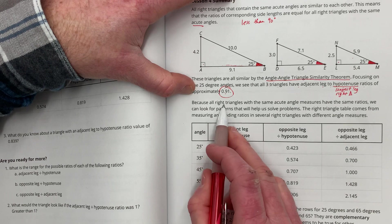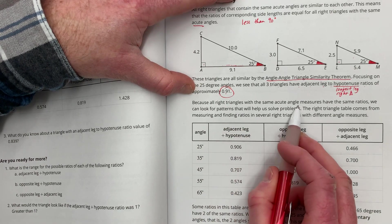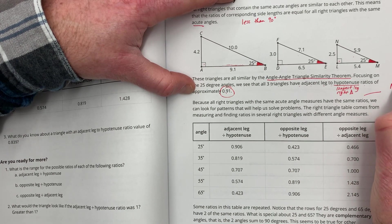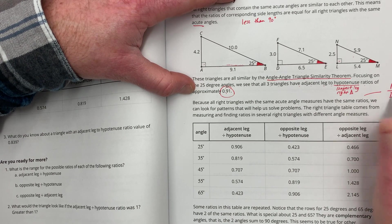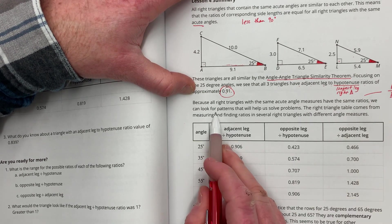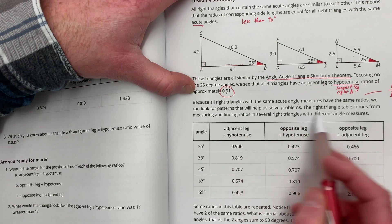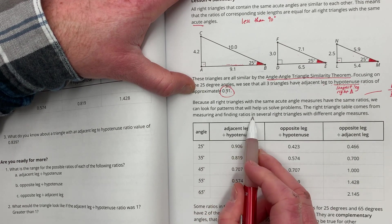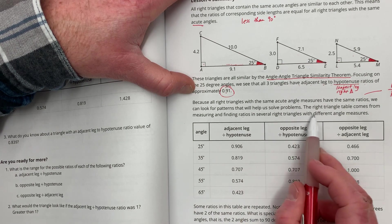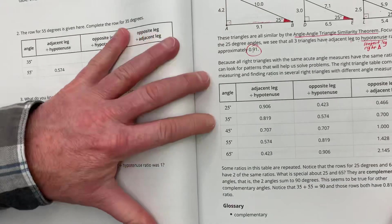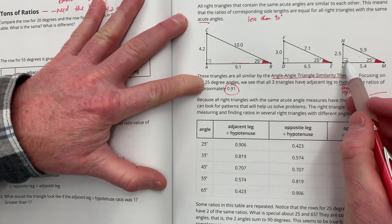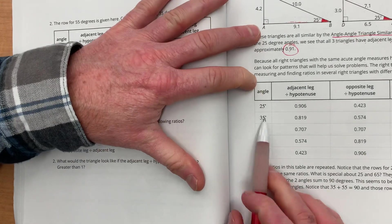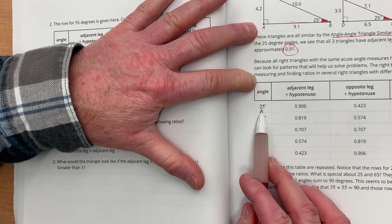So, because all right triangles with the same acute angle measures have the same ratios, what is a ratio? It's basically a numerator divided by a denominator. We can look for patterns that will help solve problems. So, the right triangle table comes from measuring and finding ratios in several right triangles with different angle measures. So, if you have a right triangle, remember, triangle with a little box or 90 degrees, and you have an angle of 25 degrees...